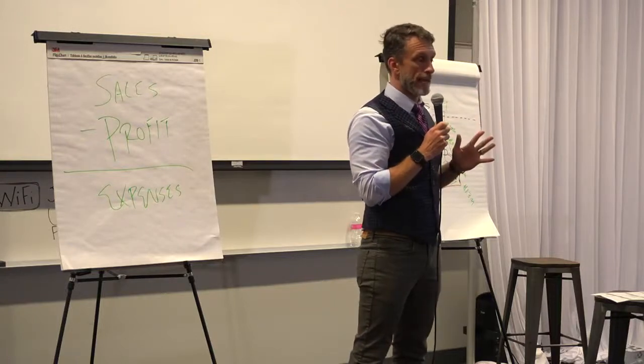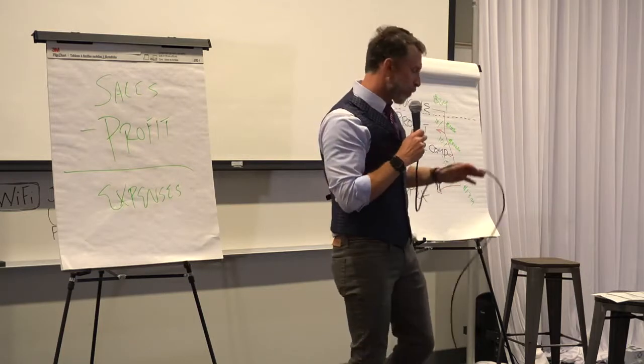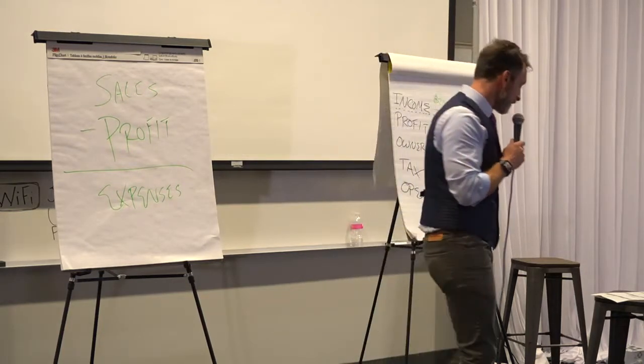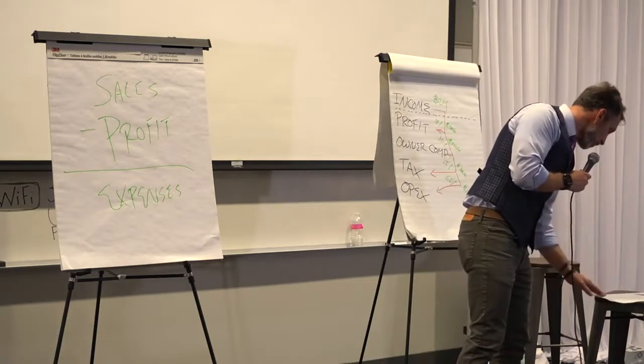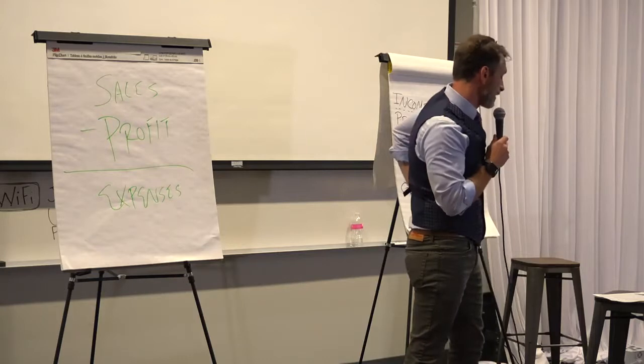I'd argue this is the most important thing I can share with you today, is the concept of Parkinson's Law. Parkinson's Law points to the behavior of how we function with money. This is the answer, by the way, to number five. The concept of Parkinson's Law is the answer to number five.